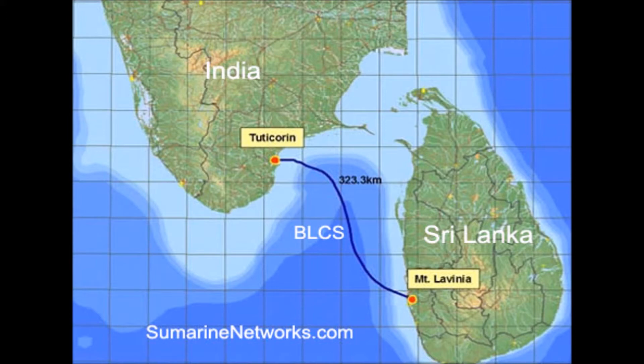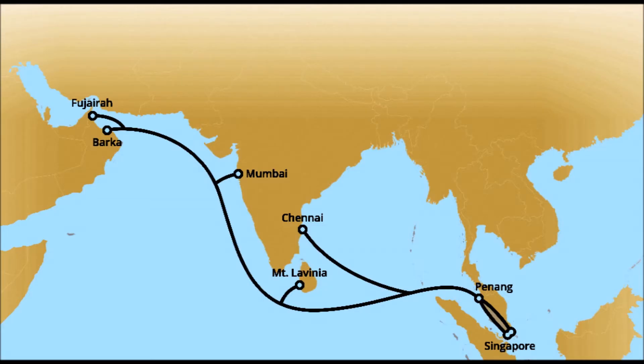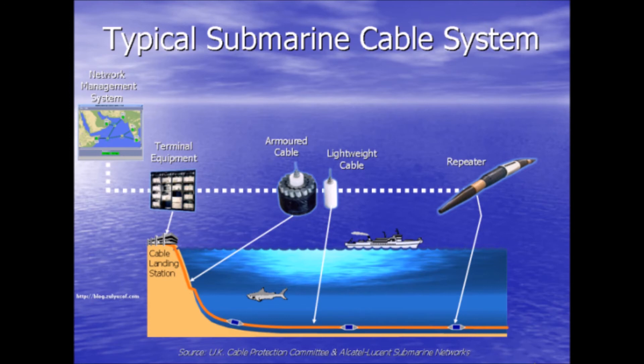This is India. This is the Bay of Bengal Gate. This is Dubai, Singapore. This is the Lanka Dialog cable. The speed is 6.4 Tbps. This is the landing station. This is the problem with the cable — this is the point-to-point cable. It is the bottleneck.